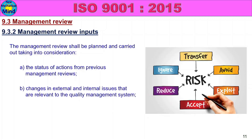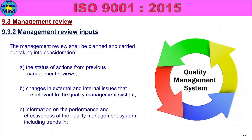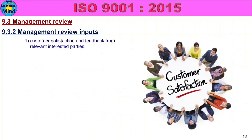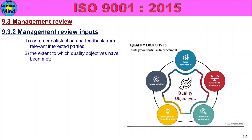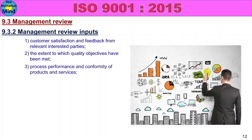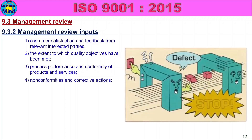If there are any changes, those changes will be verified. Then you will see information on the performance and effectiveness of the quality management system, including trends. The process of performance and conformity of products and services. Non-conformities and corrective actions.